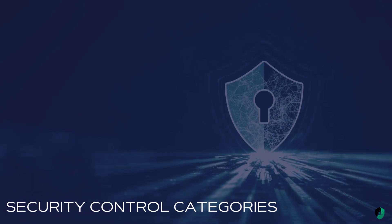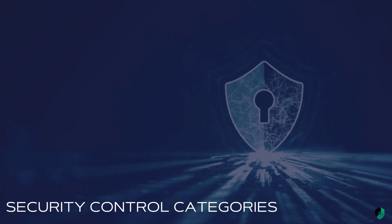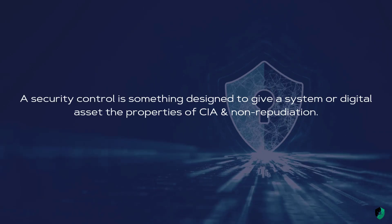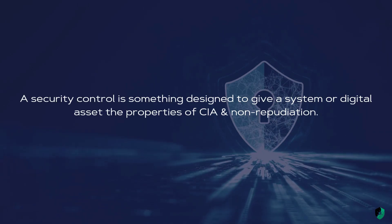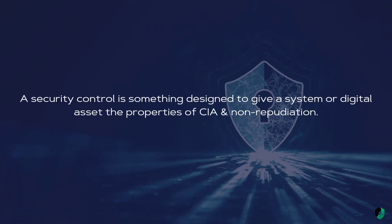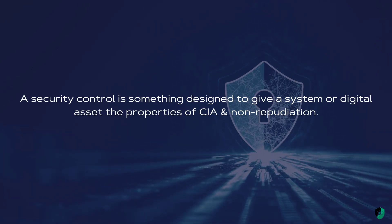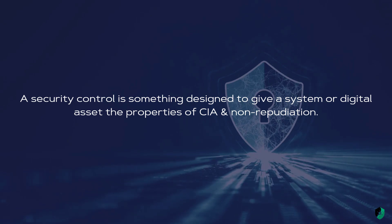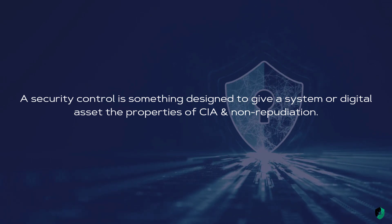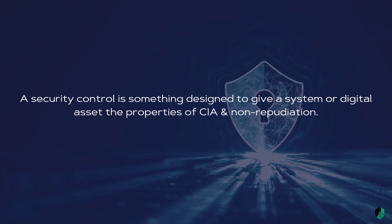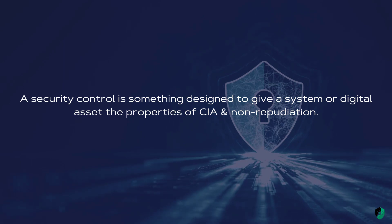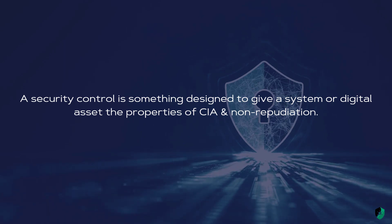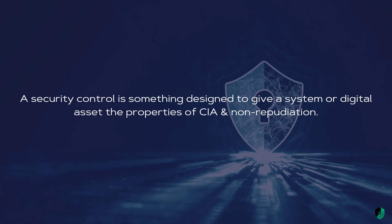Let's talk about security control categories. But first of all, what exactly is a security control? A security control is something that is designed to give a system or a digital asset the properties of the CIA — confidentiality, integrity, availability — and non-repudiation.